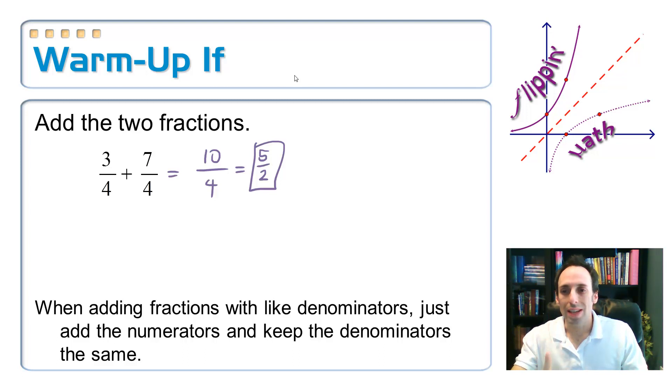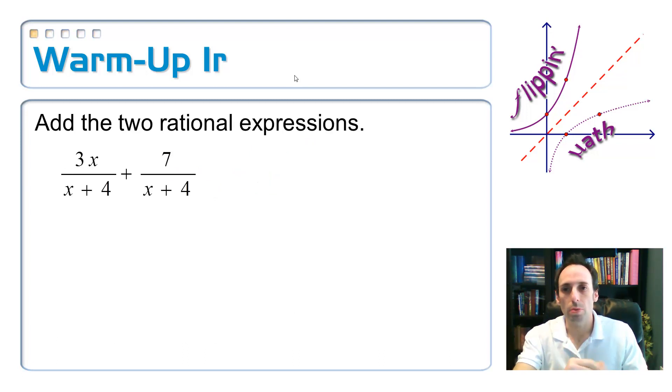Now let's do the same kind of thing except for with algebraic expressions. So warm up one R, rational expressions. Look, the denominators are the same. If the denominator is the same, we keep it the same, and that is x plus four.